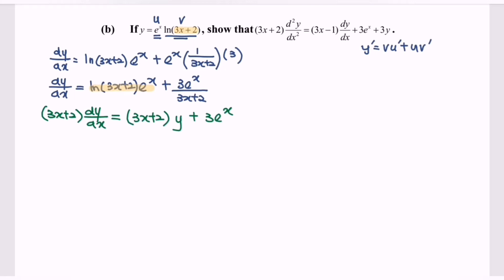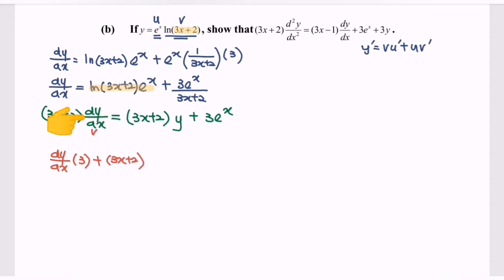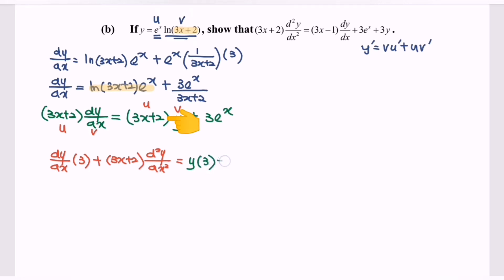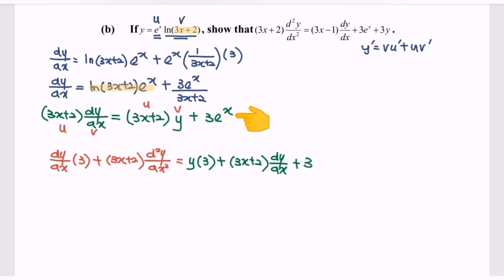Now we find the second derivative. Again, apply the product rule. We have u and v. Differentiating the left side gives dy/dx times u prime which is 3, plus u times v prime which is the second derivative. On the right, differentiate y times 3 plus u times dy/dx, plus differentiate 3eˣ which gives 3eˣ.